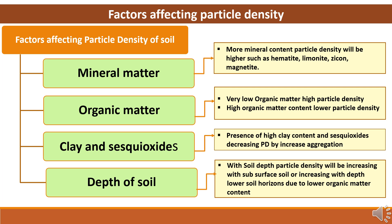The various factors affecting particle density can be classified as: mineral matter, organic matter, clay and sesquioxides, and depth of soil. More mineral matter content reflects higher particle density. Presence of minerals such as hematite, limonite, zircon, and magnetite indicates high particle density. Soils with very low organic matter have high particle density, while high organic matter content reflects lower particle density. Presence of high clay content and sesquioxides decreases particle density by increased aggregation. Particle density increases with depth in lower soil horizons due to lower organic matter content.